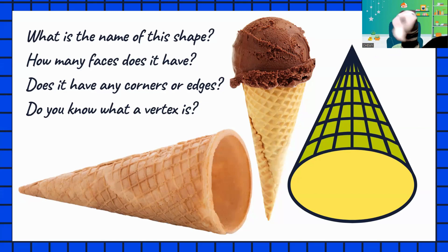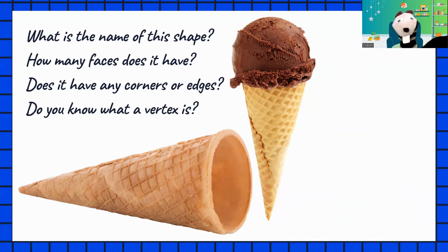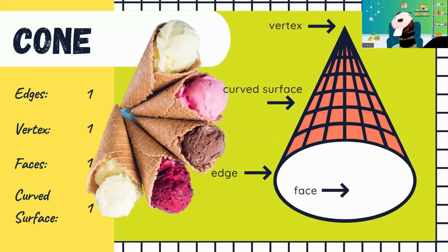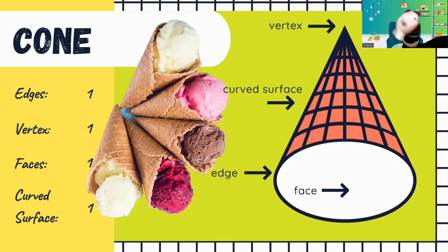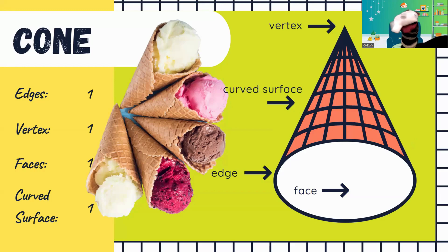Alright, let's find out. Oh, that's a lot of cones. Well, a 3D cone — does it have a vertex? Yes, it does. It's that little point at the top. And it has a curved surface. It holds the ice cream in. It has an edge, and it has one face. So it has one of everything.